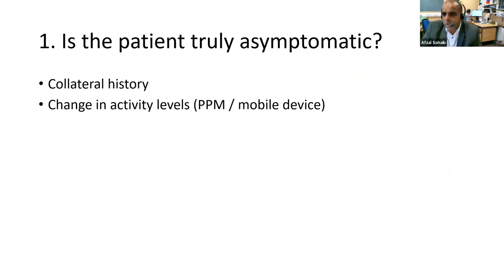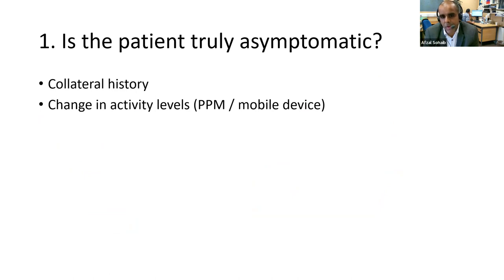Is the patient asymptomatic or symptomatic? Our gentleman was incidentally found to be in AF at pre-assessment, so as far as we know he didn't have many symptoms. Determining whether a patient has symptoms really determines what you do next — whether you try to cardiovert or give additional rate control. With older patients, they may just think they're more tired or their exercise tolerance has fallen away — collateral history from partners or family is quite important.